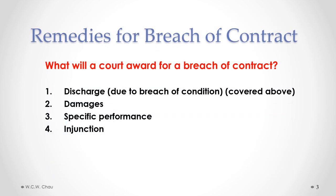Here is a list of the different types of remedies that a court may award for a breach of contract. First is a discharge due to a breach of condition. Second is some kind of damages. Third is specific performance. And fourth is injunction. We won't repeat the explanation of a discharge due to a breach of condition, but in this particular part we will focus on damages, or more specifically, expectation damages.